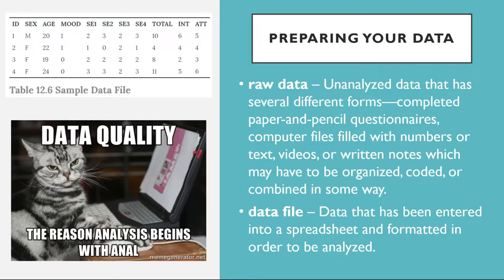If you have multiple response measures, such as the self-esteem measure in Table 12.6, you could combine the items by hand and then enter the total score in your spreadsheet. However, it's much better to enter each response as a separate variable in the spreadsheet, and use the software to combine them, for example using the average function in Excel or the compute function in SPSS. Not only is this approach more accurate, but it allows you to detect and correct errors, to assess internal consistency, and to analyze individual responses if you decide to do so later.